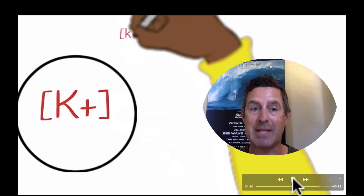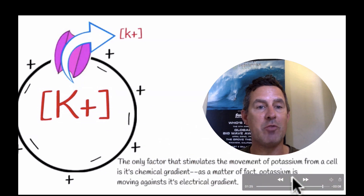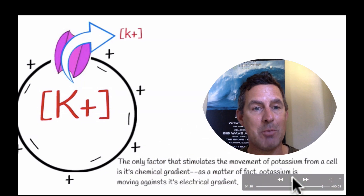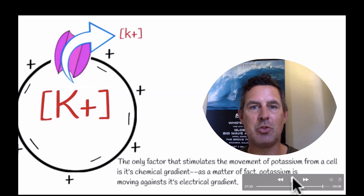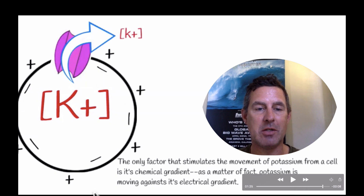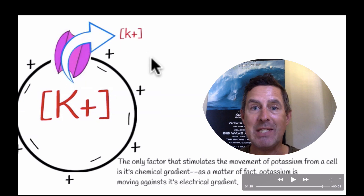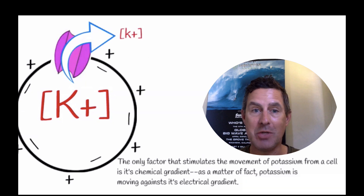Now let's take a look at potassium. Once again, potassium is incentivized to move out of the cell down its chemical gradient. But now if we look at the charge — just assume the same negative 70 millivolts we saw with sodium — we certainly see a negative charge within the interior of the cell, all the way around. And we talked about potassium wanting to move down its chemical gradient from inside the cell to outside of the cell, and that's no different here.